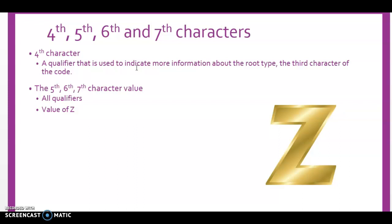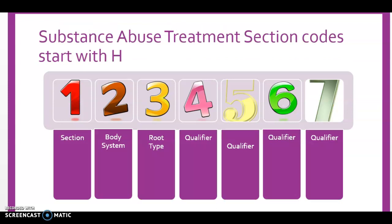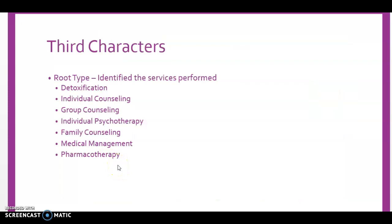Looking at the substance abuse ICD-10 codes, these codes will start with H. The second character is for the body system, the third character is for the root type, and then characters four through seven are qualifiers. The root types in the substance abuse treatment section include detoxification, individual and group counseling, family counseling, individual psychotherapy, medical management, and pharmacotherapy.